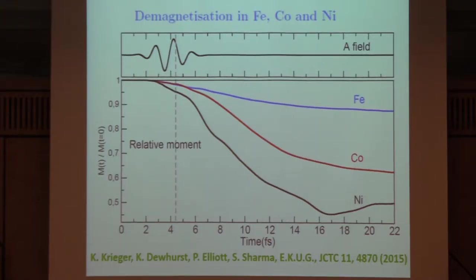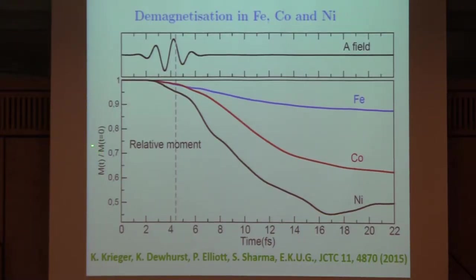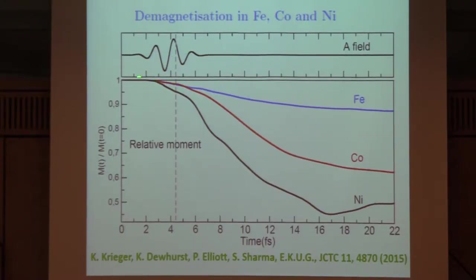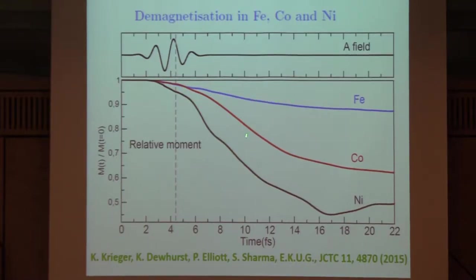Here is now the first result for a calculation: iron, cobalt, nickel bulk. This is the laser field—a very short laser pulse of 6 femtoseconds. The magnetization, normalized to the initial magnetization, decreases as a function of time. Most of the decrease happens actually after the laser pulse is over. The effect is strongest for nickel and weakest for iron in this case.